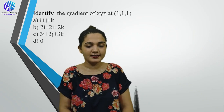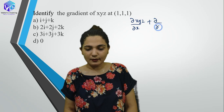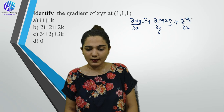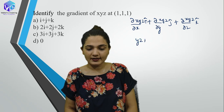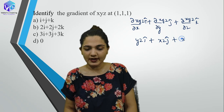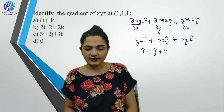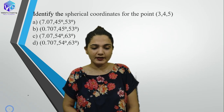Coming to the next question: gradient of xyz at point (1,1,1). Gradient = del(xyz)/del(x) i-cap + del(xyz)/del(y) j-cap + del(xyz)/del(z) k-cap = yz·i-cap + xz·j-cap + xy·k-cap. When we put values (1,1,1), we get i-cap + j-cap + k-cap. This is option A.